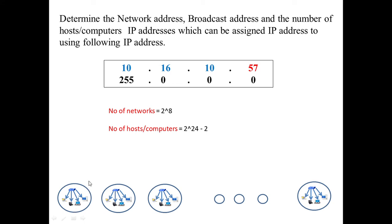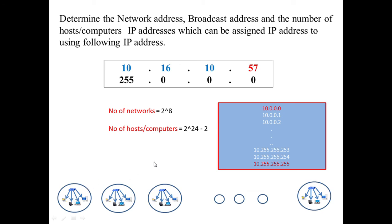To summarize the example: the network portion byte 10 is fixed, and the three host bytes are set to 0.0.0 for the network address and 255.255.255 for the broadcast address. All addresses in between are the valid host addresses that can be assigned to individual machines within a single network. So for Class A we have up to 256 networks, and within each network we can have a very large number of assignable host addresses.